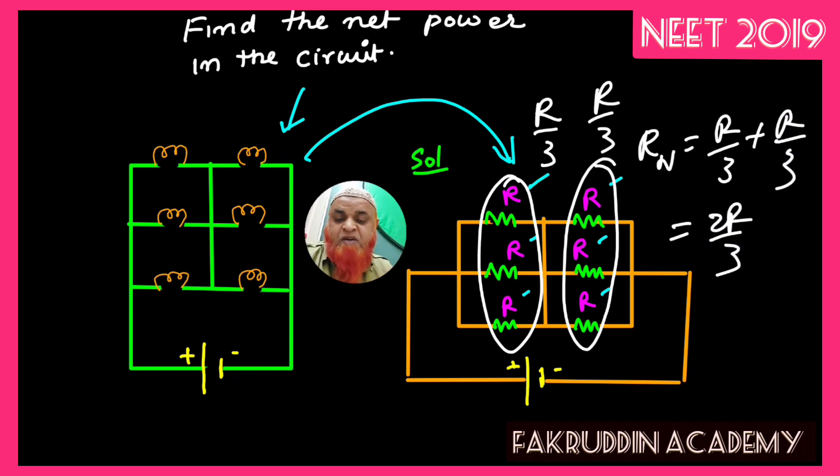But he is asking us to find out the power. So what is the power produced by all these bulbs? You all know the formula for power: power is E squared by R_net.